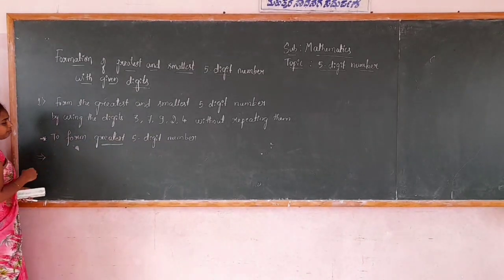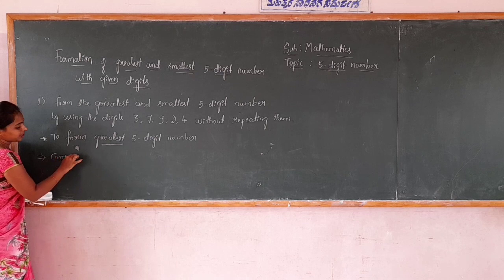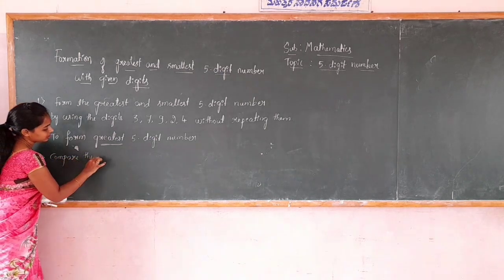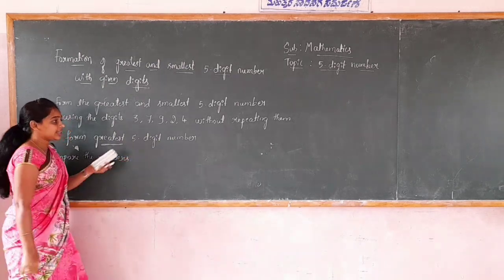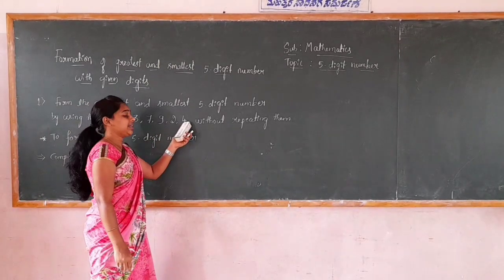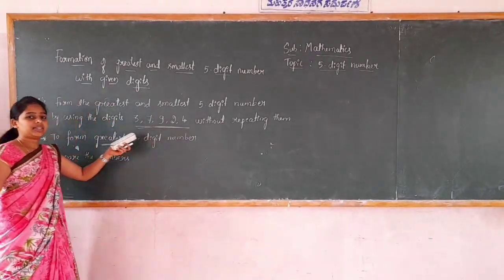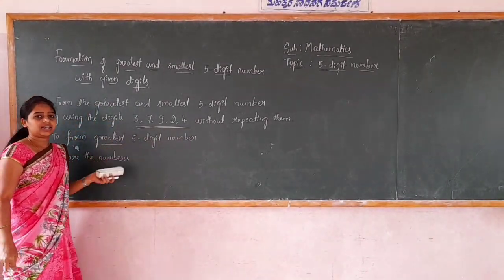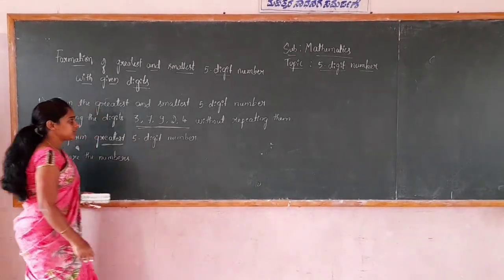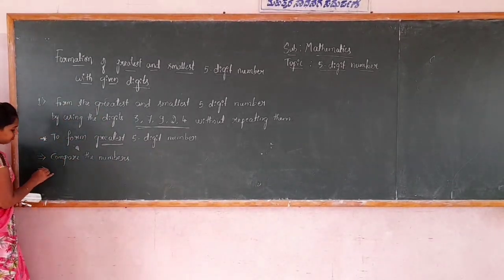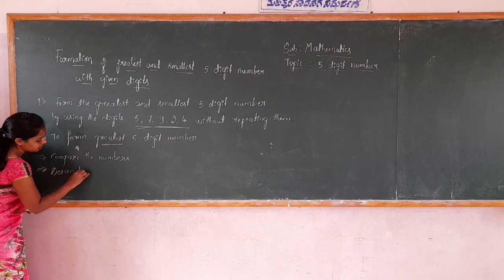Step 1: Compare the numbers. Write the given numbers in descending order. Descending order means greatest to smallest number.